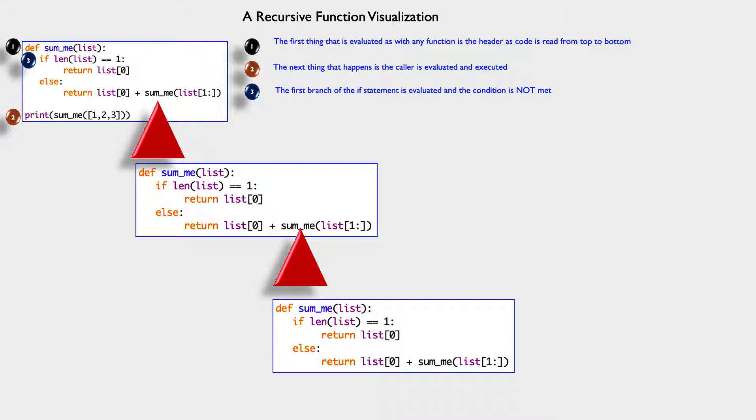Why? Because it says if the length of the list is one, that is not the case now. So we pop down to the else statement. Now we get to the return of the else statement, and here's where the fun begins.